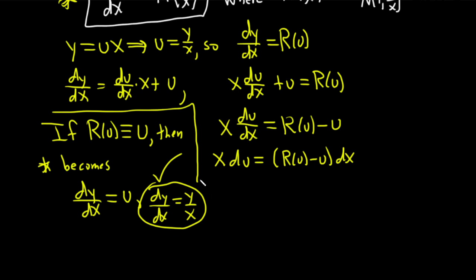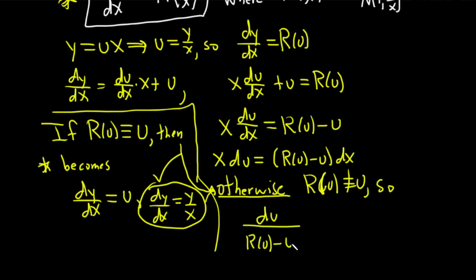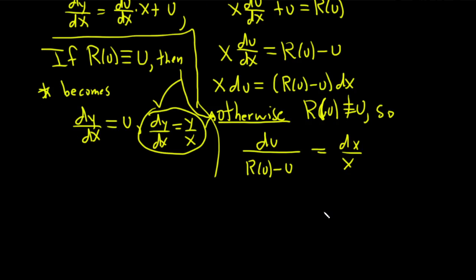Otherwise, R(u) is not u, so we can safely divide by R(u) − u without dividing by zero, and also divide by x. We get du / (R(u) − u) = dx / x. This is separable — you've separated the variables. Now you can just integrate both sides. Whether or not you can compute the integral is another story, but in theory you can solve it. So in any case, it's separable.